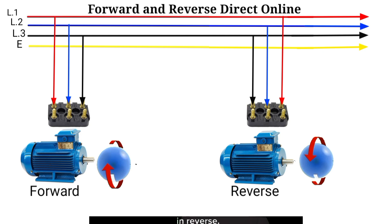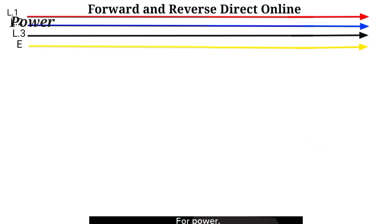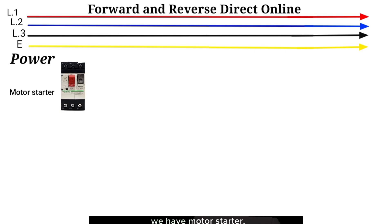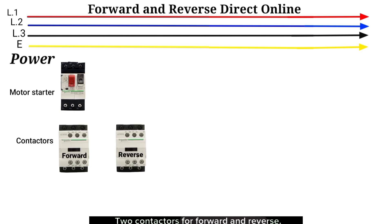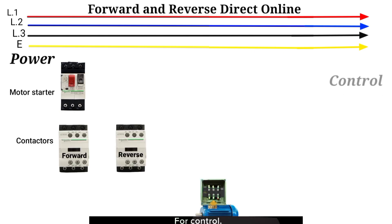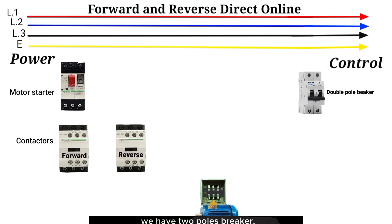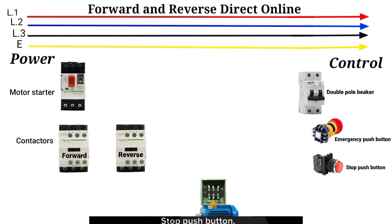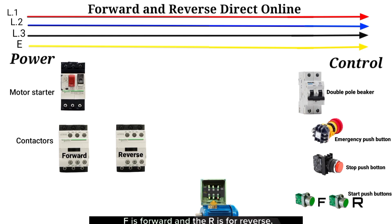Let's drive into the main process. For power, we have a motor starter, two contactors for forward and reverse, and the motor. For control, we have a two-pole breaker, emergency push button, stop push button, and two start push buttons — F for forward and R for reverse.